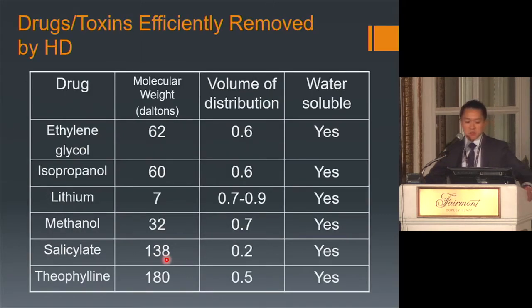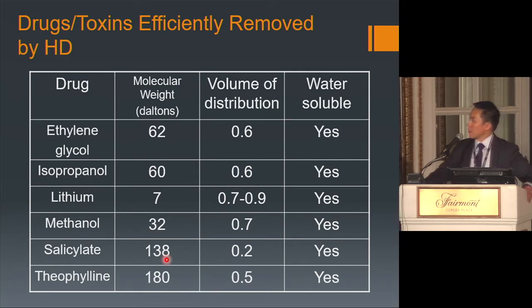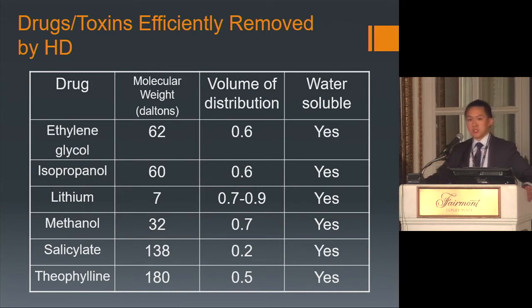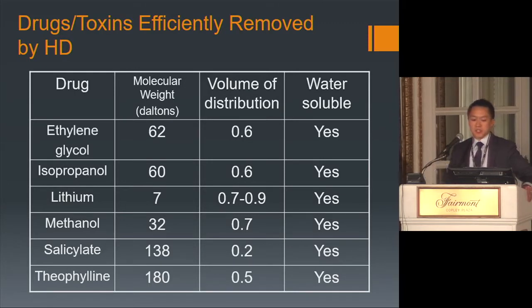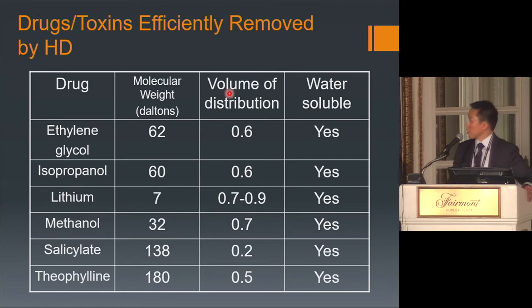Lithium and ethylene glycol are the most common drugs removed by hemodialysis over the last 20 years. They share characteristics of relatively low molecular weights, low volume of distribution, and water solubility. When performing hemodialysis to remove a toxin, choose a high-efficiency, high-flux dialyzer if possible.